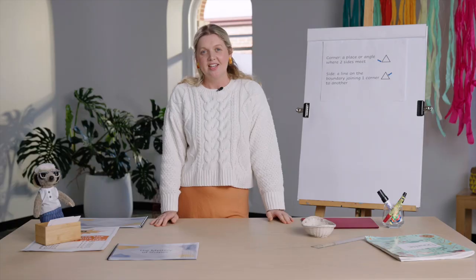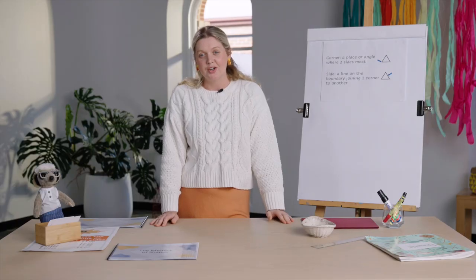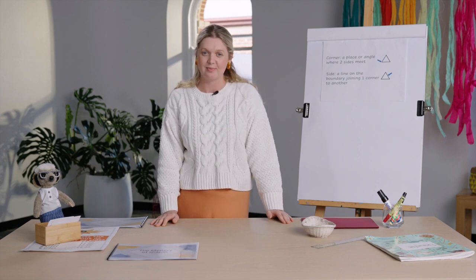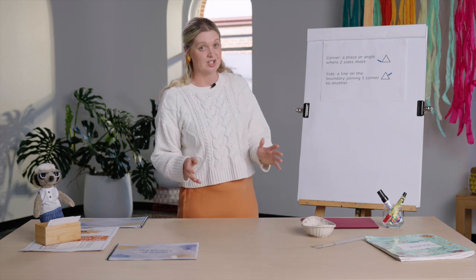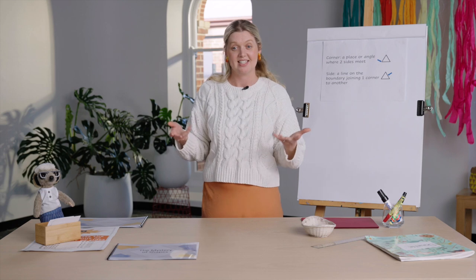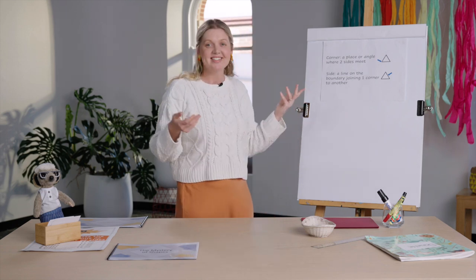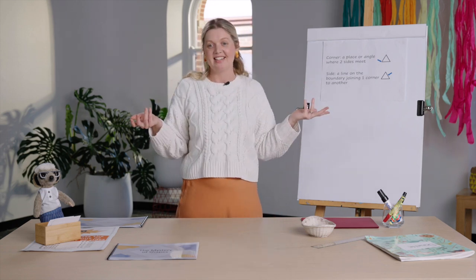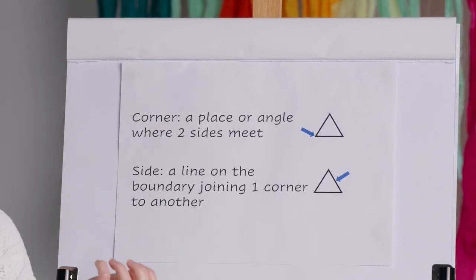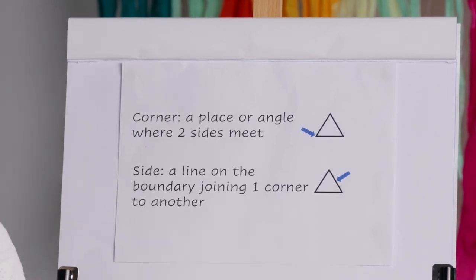Our learning intention today is to notice and describe corners and sides on two-dimensional shapes. Two-dimensional shapes have attributes, or characteristics, of a shape. Corners and sides are two of the attributes that can help us recognise a shape.